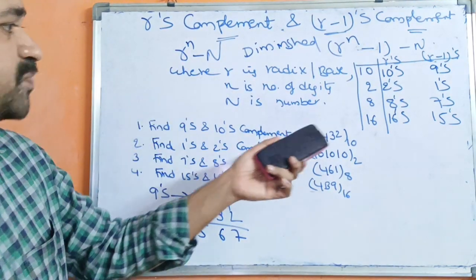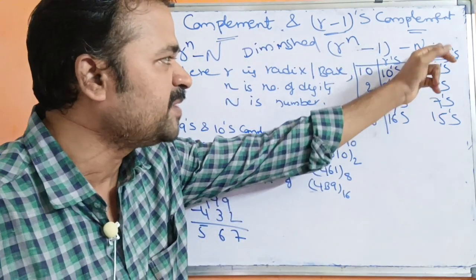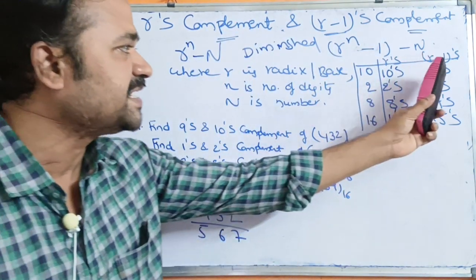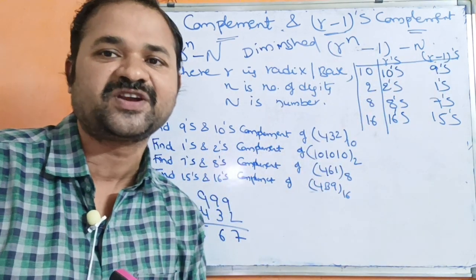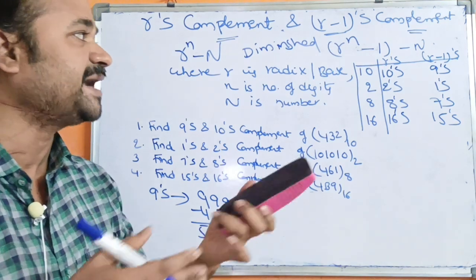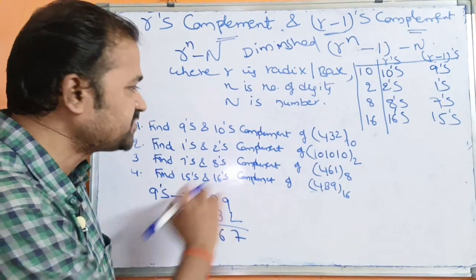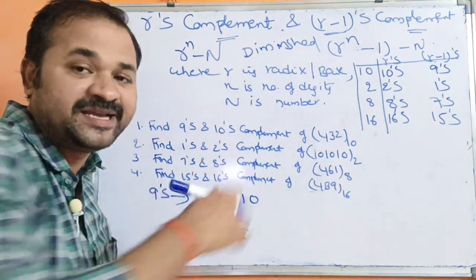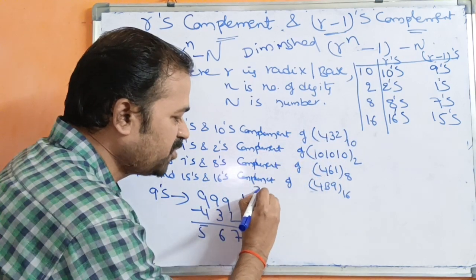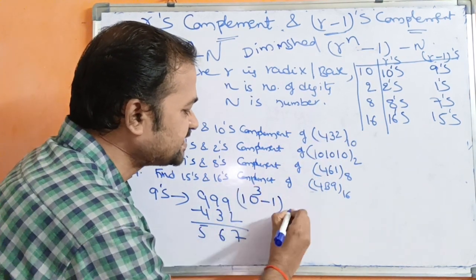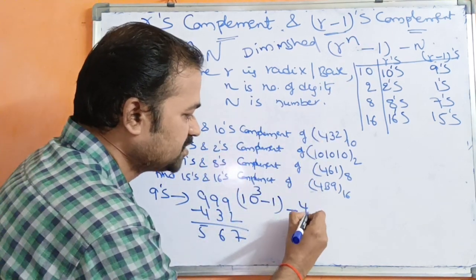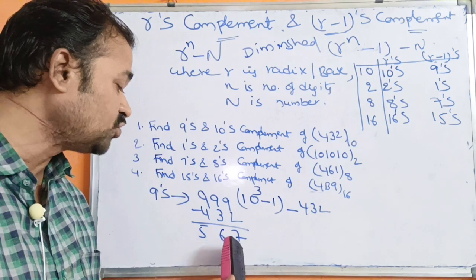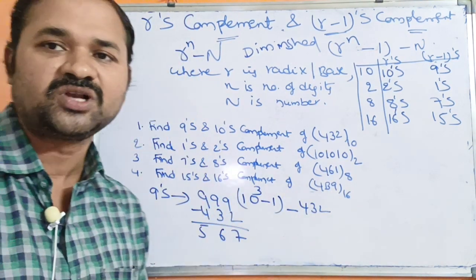We can also use the formula: for 9's complement, R^n minus 1 minus N. R is 10 (decimal), n is 3 digits, so 10^3 minus 1 minus 432 = 1000 minus 1 minus 432 = 999 minus 432 = 567. This confirms the result.